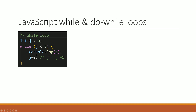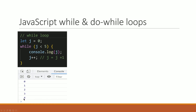1 less than 5 — true — console.log prints 1. 2 less than 5 — true — console.log prints 2. j++ gives 3. 3 less than 5 — true — console.log prints 3. j++ gives 4. 4 less than 5 — true — console.log prints 4. j++ gives 5. 5 less than 5 — false. Output: 0, 1, 2, 3, 4.